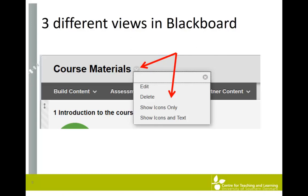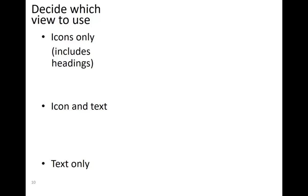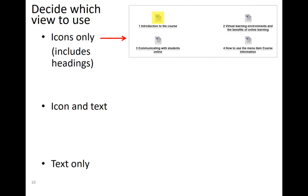I'll now show you what items in Blackboard will look like when you select each of the three views. First, we have the Icons Only view. As you can see, Blackboard's icon will be displayed above the heading of the item you have created. Students have to click the headings to see the actual contents of the item, so in this view the item actually works as a folder.